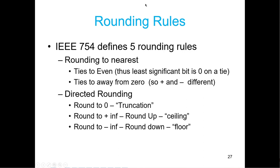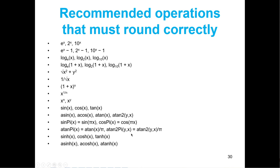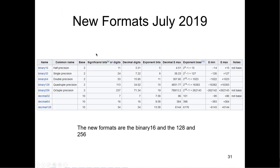You also have to contend with rounding rules for those last couple of digits — there are five different rounding rules. The default rounding rule is rounding to nearest, ties to even. Some of the recommended operations that must round correctly are listed here. New formats have been added: we used to just have single and double precision, but now we have half precision (16 bits), and quadruple and octuple precision, plus some decimal representations.